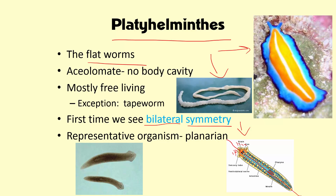Unlike a cnidarian, which has radial symmetry, and unlike a sponge, which has no symmetry at all, organisms — and animals specifically — starting with the platyhelminthes, or flatworms, will show bilateral symmetry. That is their big adaptation.